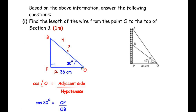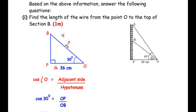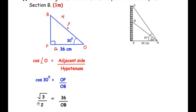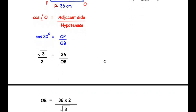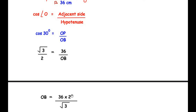So, cos(angle O) = adjacent/hypotenuse. Angle O is 30 degrees, so cos(30°) = OP/OB. The value of cos 30° is √3/2, giving us √3/2 = 36/OB. Rearranging, OB = (36 × 2)/√3.